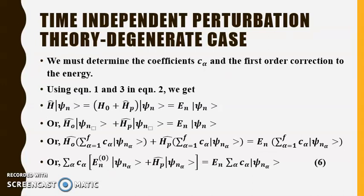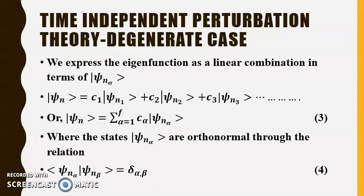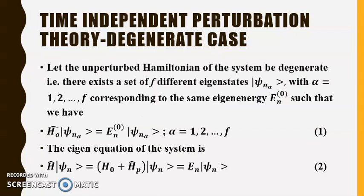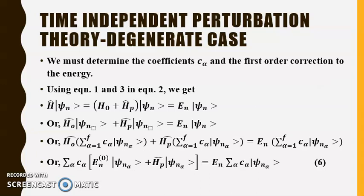Now we must determine the coefficients c_α and the first order correction to the energy. Using equations 1 and 3 in equation 2, we have H|ψ_n⟩ = (H^0 + H')|ψ_n⟩ = E_n|ψ_n⟩, which gives H^0|ψ_n⟩ + H'|ψ_n⟩ = E_n|ψ_n⟩. In the next step we write |ψ_n⟩ in expanded form in terms of the coefficients c_α.